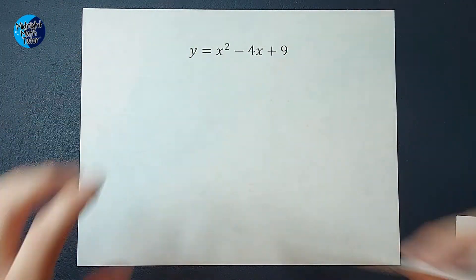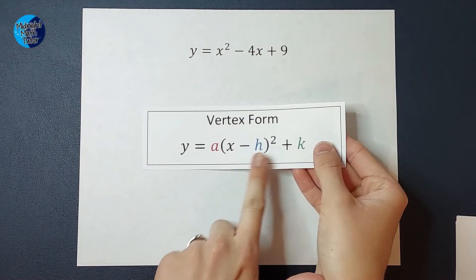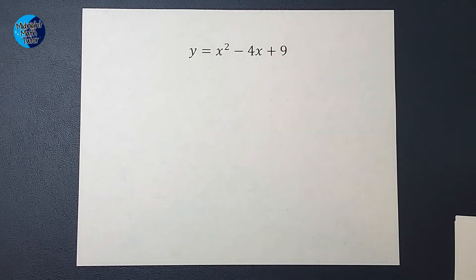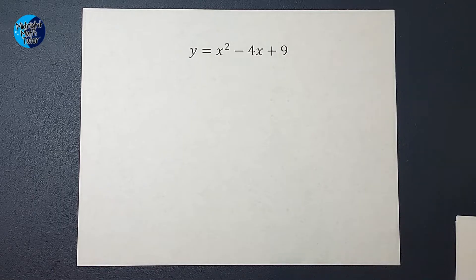So to get here, we want a parentheses squared. In order to do that, what I'm going to do is complete the square. Now I'm going to do it here for you, but if you find you need it explained in a little bit more depth, I will link a video in the corner for you.